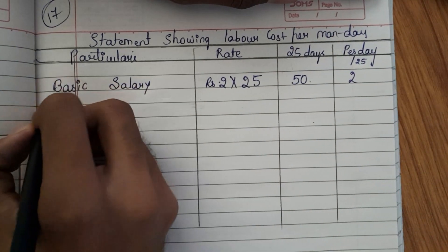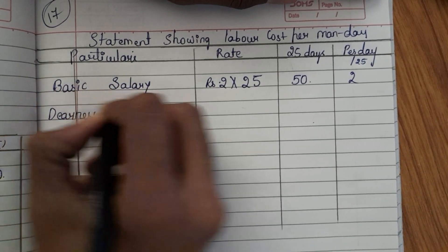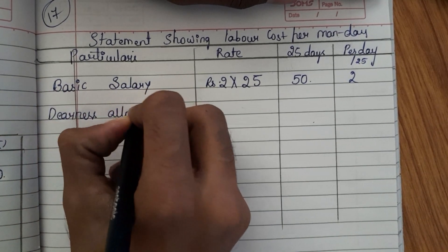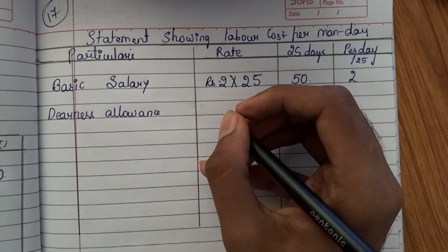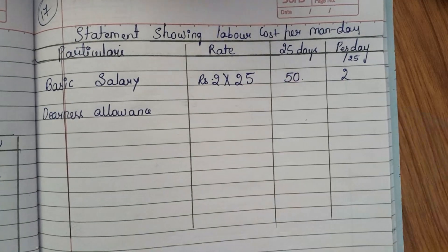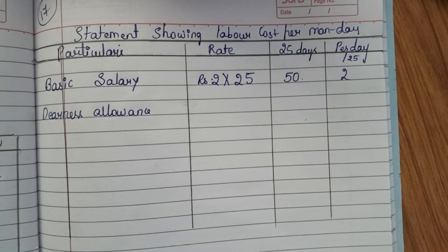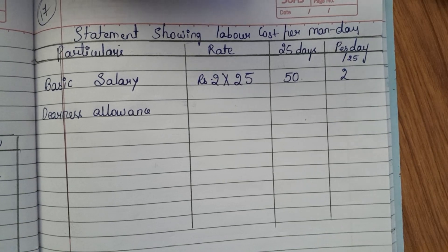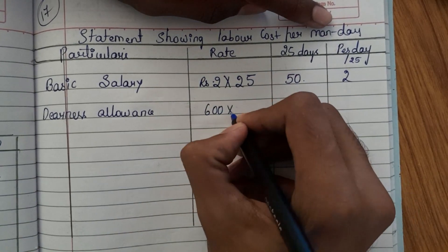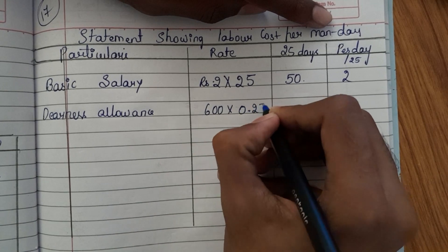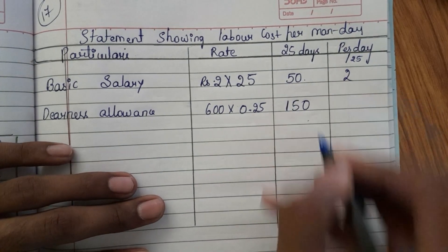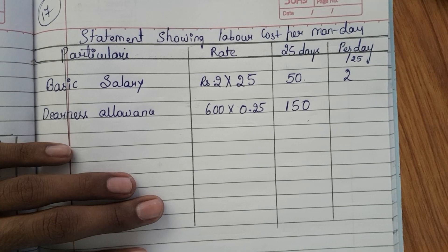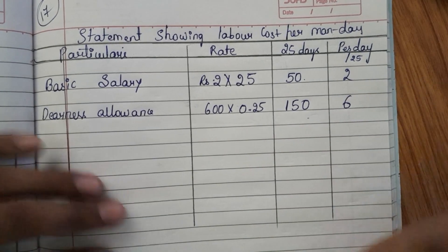The second item is DNS allowance. DNS allowance is 25 paisa for every point over 100 cost of living index for working class. The current index is 700 points, so neglect 100 — for 600 points we provide 25 paisa each. That is 600 into 25 paisa, which equals rupees 150 for 25 days. Dividing 150 by 25 gives rupees 6 per day.